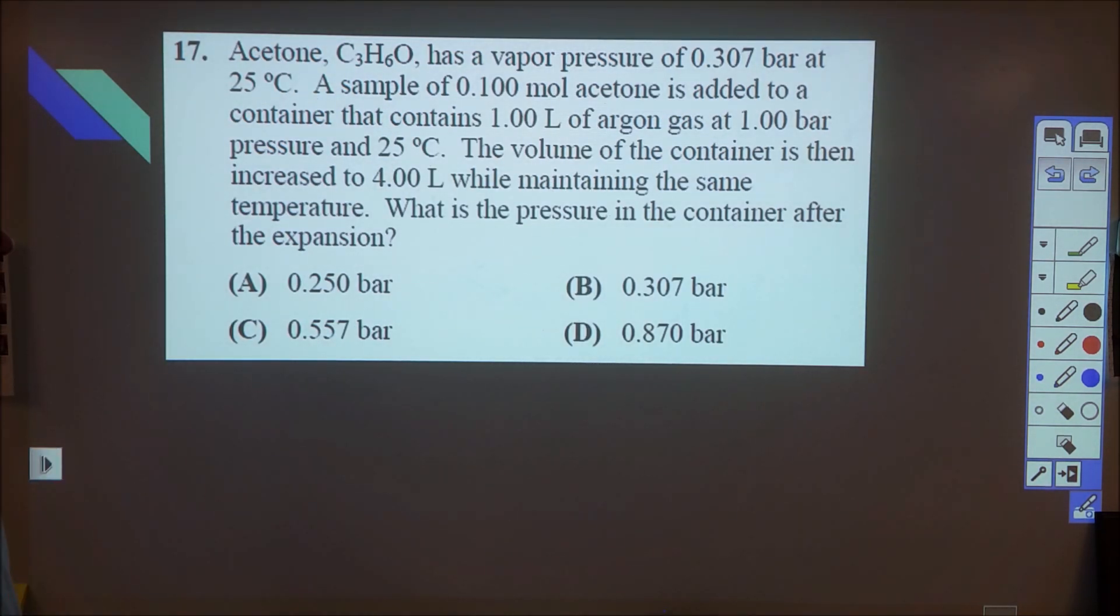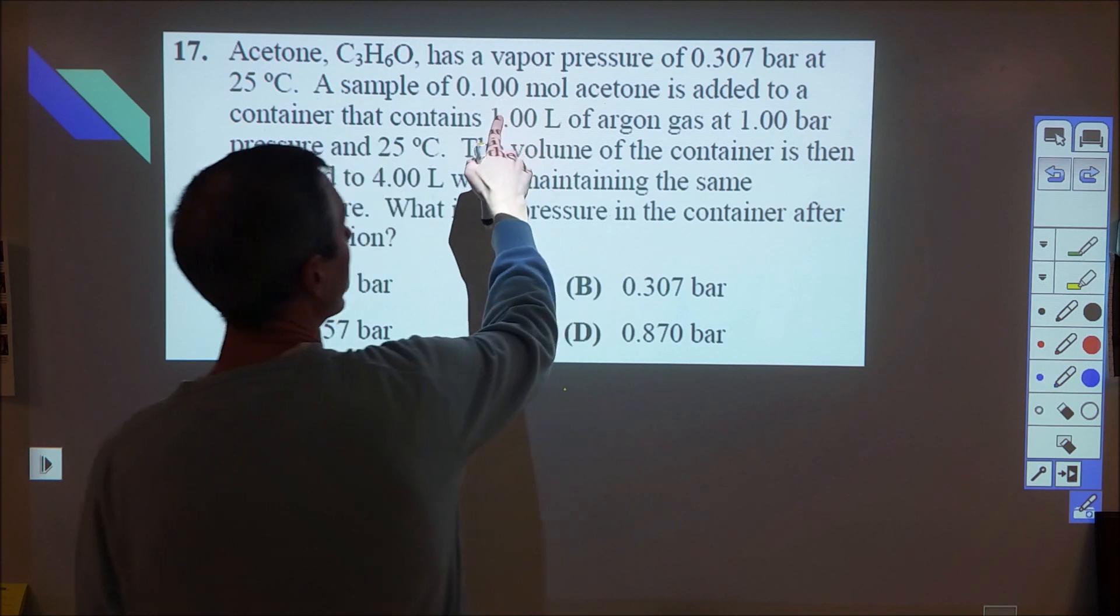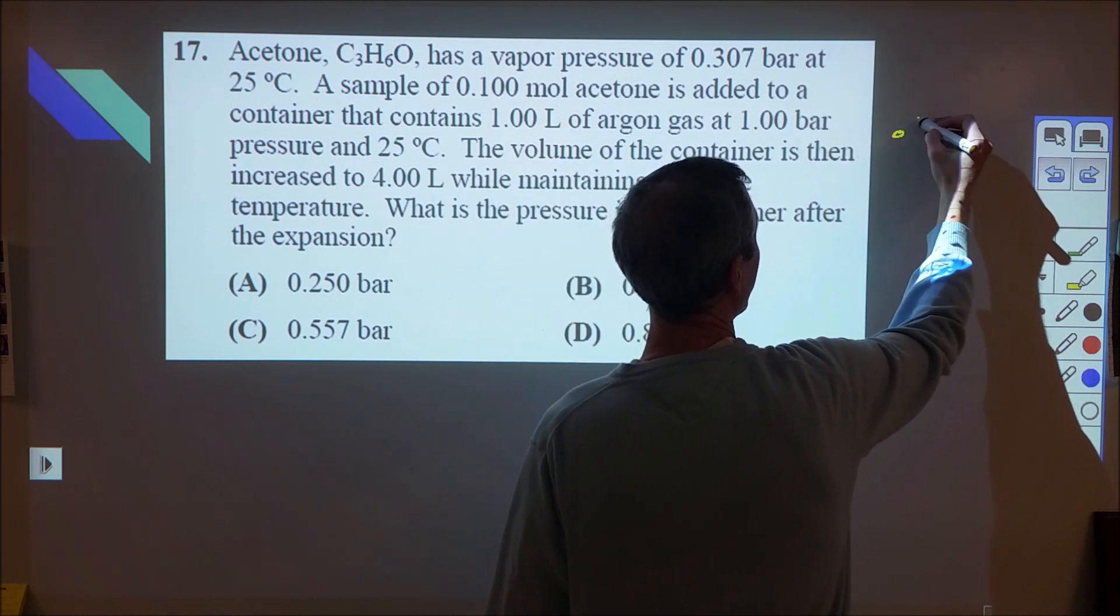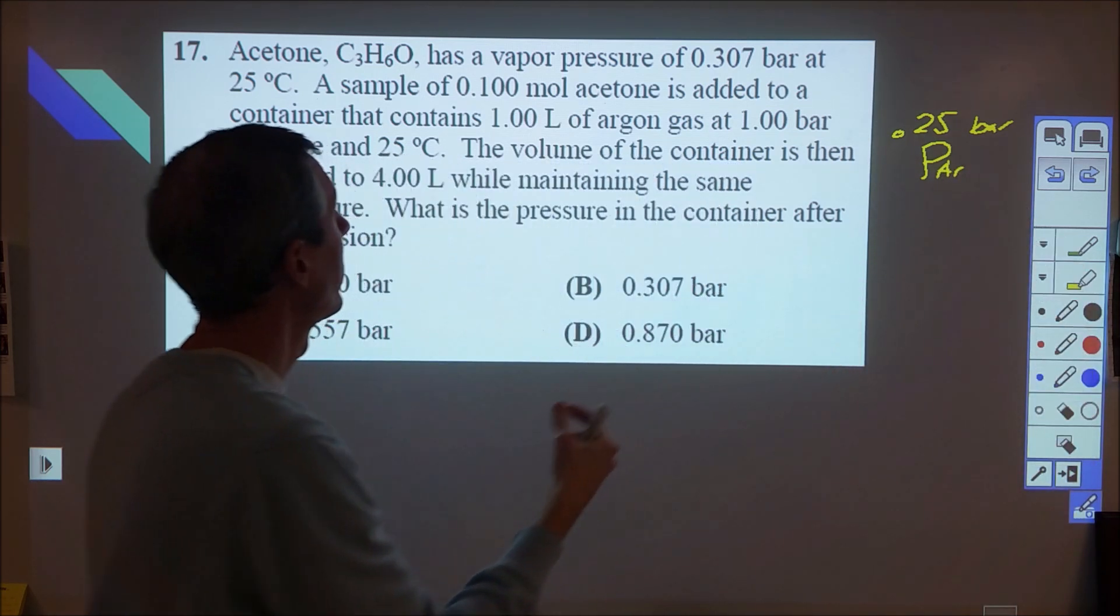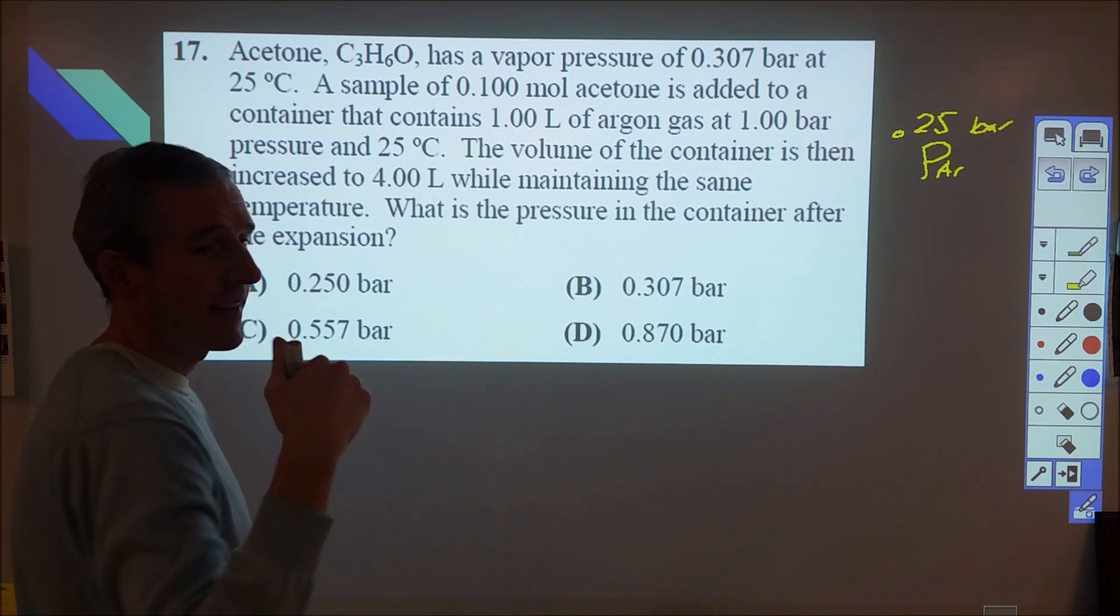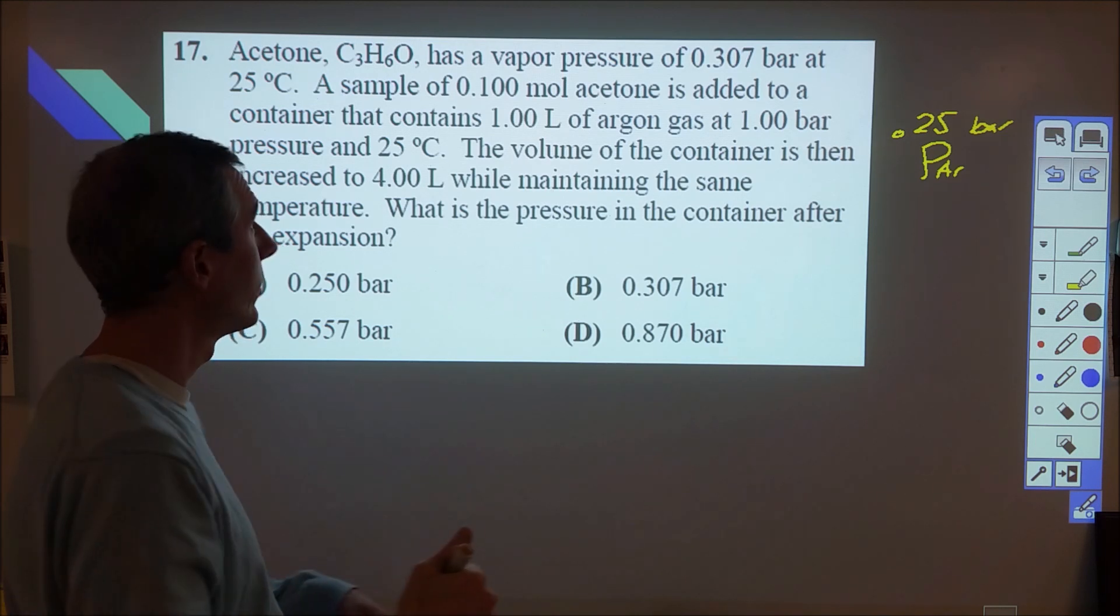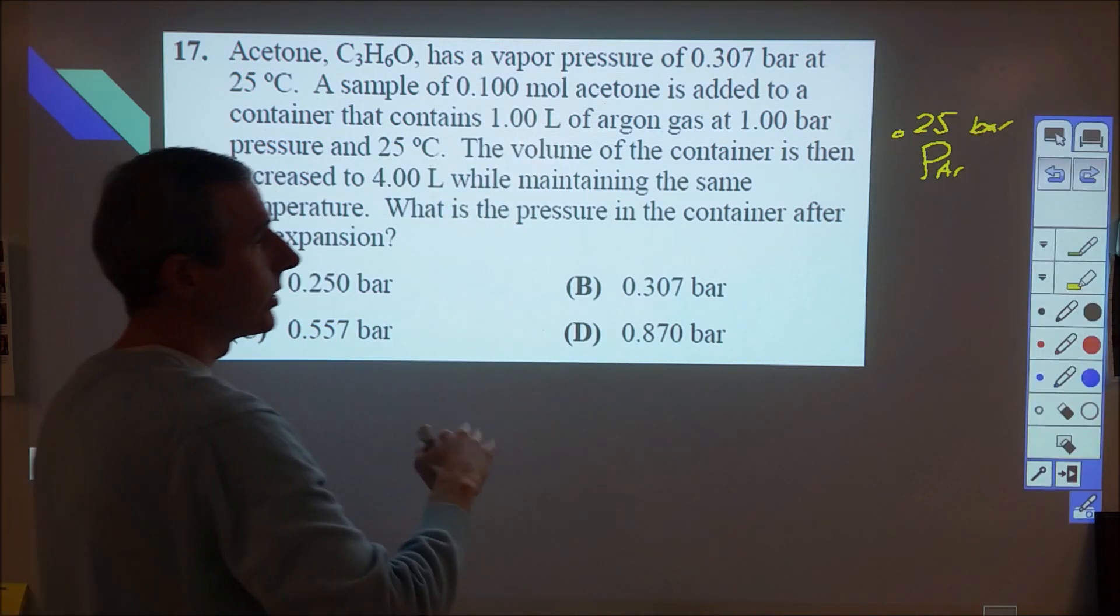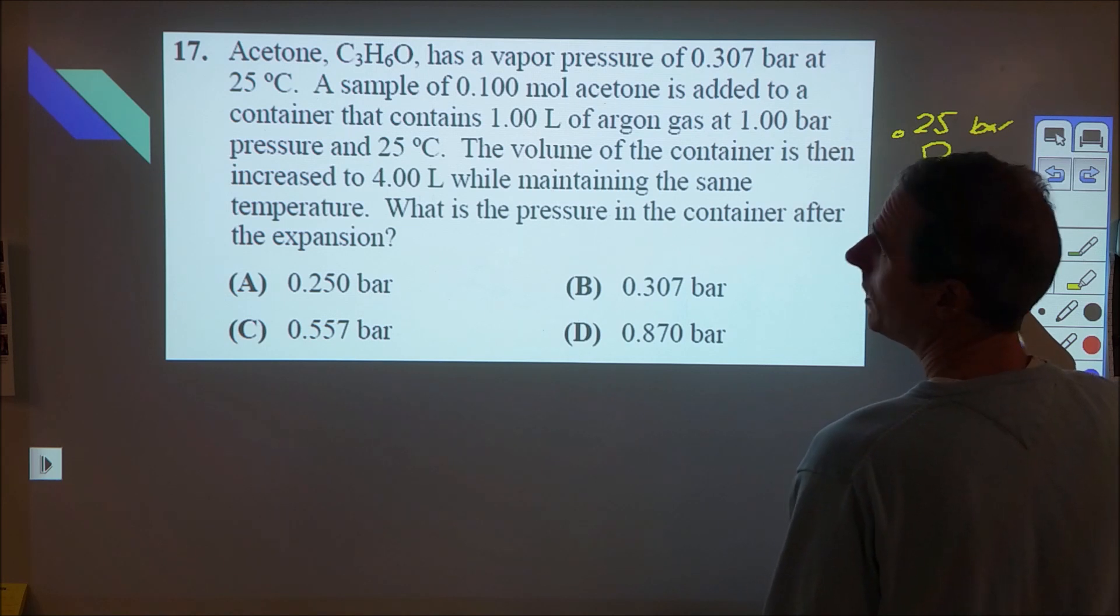This one we're just looking at a simple vapor pressure question with two key ideas. We have a mixture of gases, and when we look at the one liter of argon gas being expanded to four liters, that one bar is going to change to 0.25 bar pressure for the argon. Then the question is, what is the vapor pressure of the acetone? The acetone has a vapor pressure of 0.307, and that is not impacted by the actual volume of the container so long as there is sufficient liquid to occupy everything. The fact that we're looking at such a large amount of liquid acetone means we don't have to worry about all of it evaporating, and we will have 0.307 bar as the pressure of the acetone.